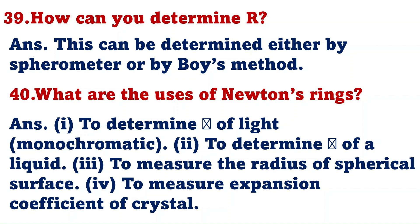How can you determine R? This can be determined either by spherometer or by Boy's method. What are the uses of Newton's rings? To determine the wavelength of light, to determine the refractive index of liquid, to measure the radius of spherical surface, to measure expansion coefficient of crystal.